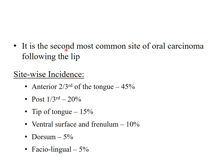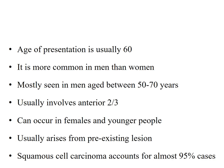In oral cavity cancers, the tongue is the second most common site after the lip. The anterior two-thirds is most commonly involved, and within that, the lateral border is the most commonly affected area. The anterior one-third is involved in 20%, the tip in 15%, the ventral surface and frenulum in 10%, dorsum in 5%, and fascial lingual in 5%. The age of presentation is usually around 60 years, more common in men, mostly seen between 50 to 70 years. Around 95% of tongue cancers are of squamous cell variety, usually arising from pre-existing pre-malignant lesions.